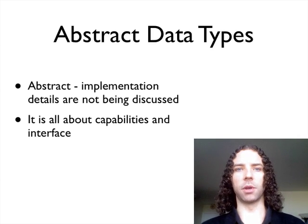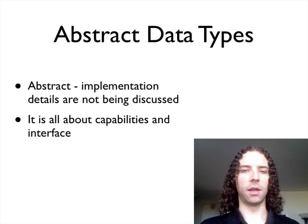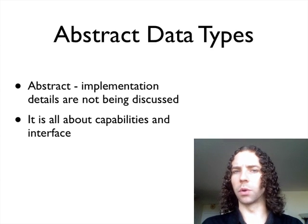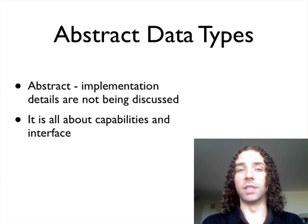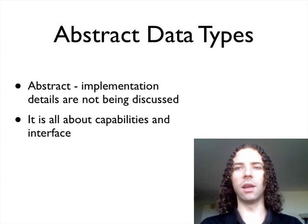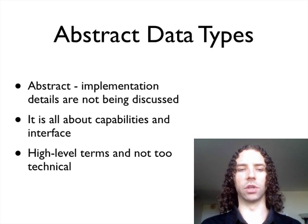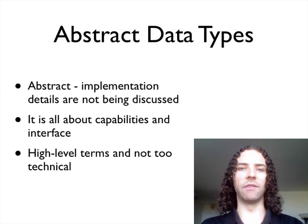You'll talk about things like, I need a kind of container that has these properties — like, it keeps the pieces of data that I put in it in order, or it puts them in a certain sorted way, or it allows me to combine them with other containers in certain ways with certain properties. So this is all that matters from the point of view of an abstract data type: what is it you're actually trying to do? What do you need from a high level? This means it's all about high-level terms and not too technical.